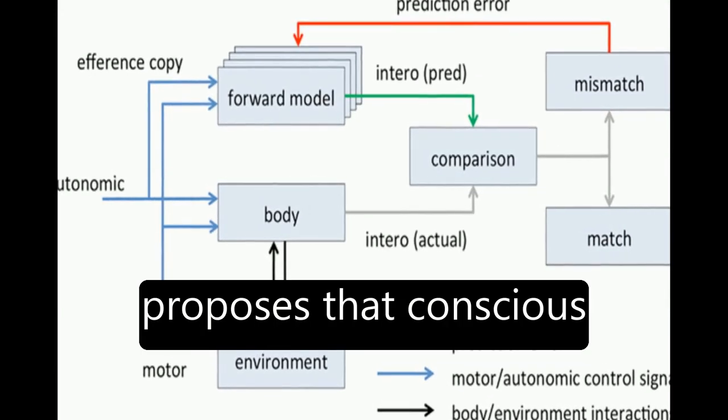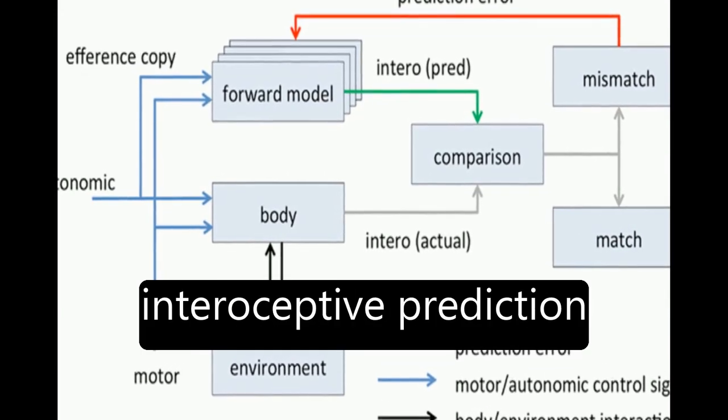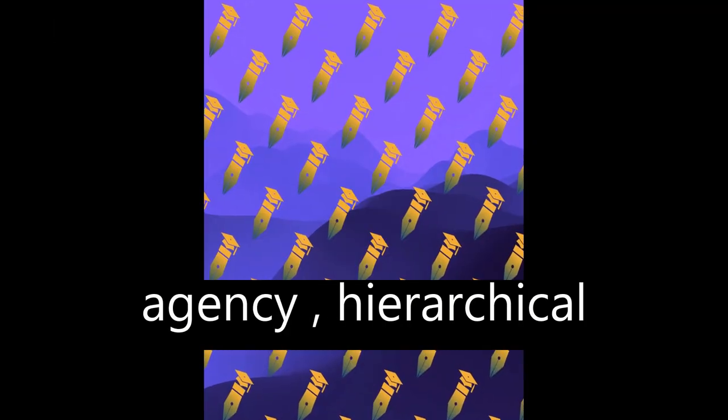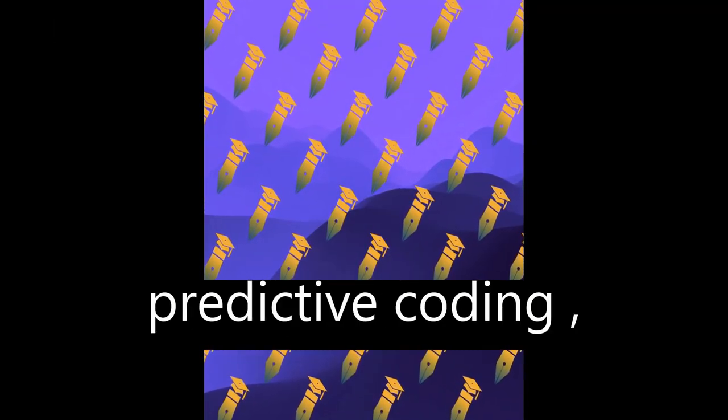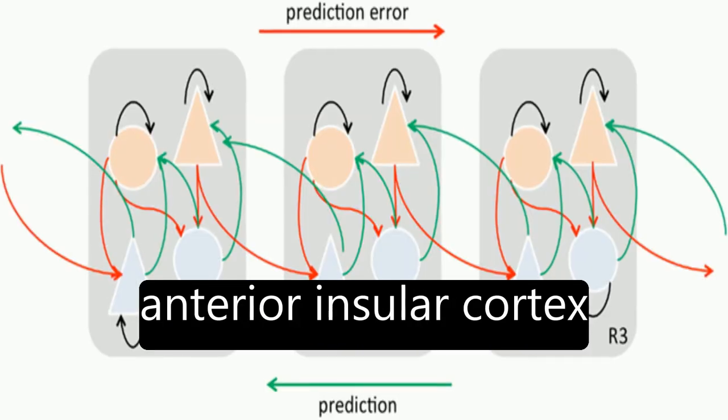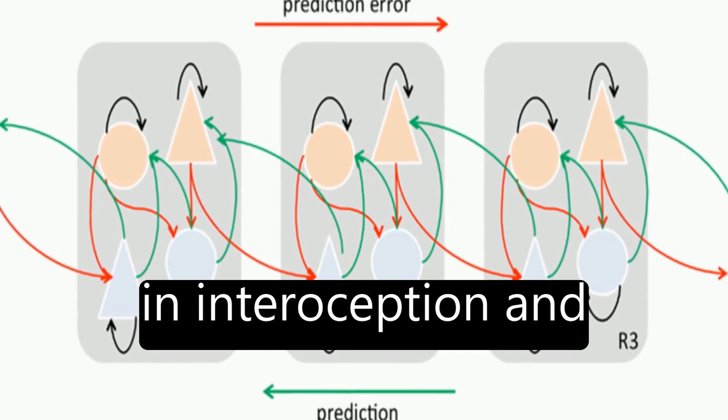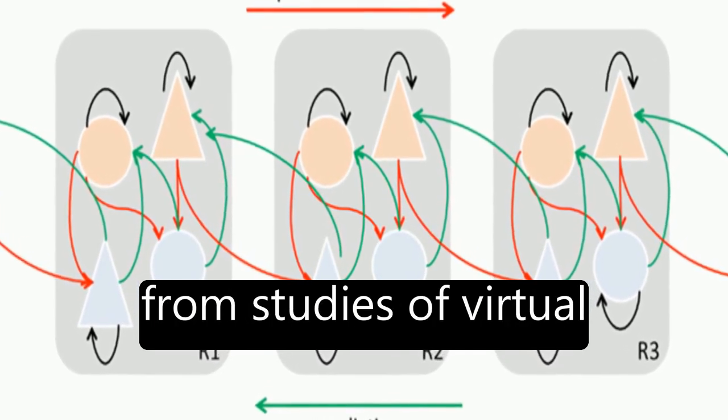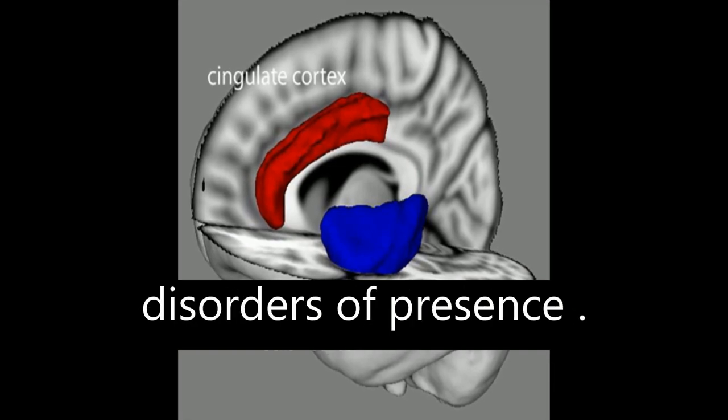The theoretical model proposes that conscious presence is based on interoceptive prediction error and is influenced by predictive models of agency, hierarchical predictive coding, dopaminergic signaling in cortex, the role of the anterior insular cortex in interoception and emotion, and cognitive neuroscience evidence from studies of virtual reality and psychiatric disorders of presence.